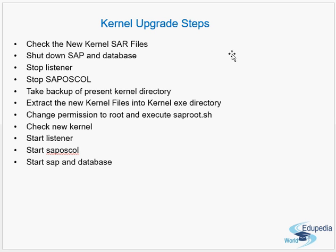After downloading, you need to shut down SAP and the database. For a kernel upgrade, there is no minimized downtime option as there is for a full SAP upgrade — if the kernel processes are not running, your SAP system is not running. You must stop the listener and the SAP OS collector as well, then take a backup of the current kernel directory. This is very important.